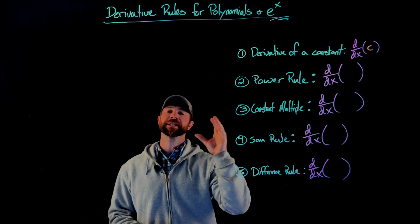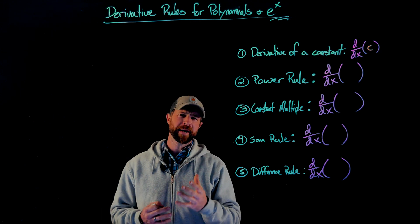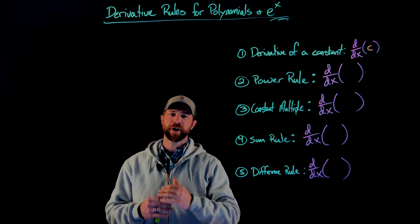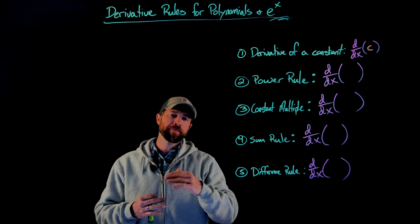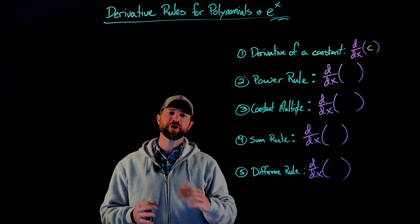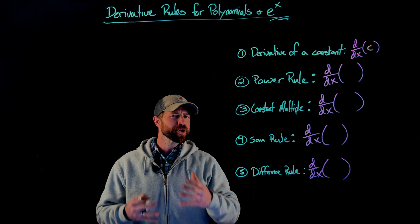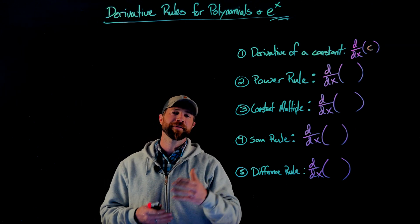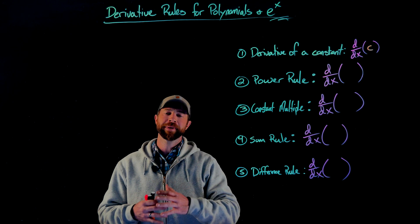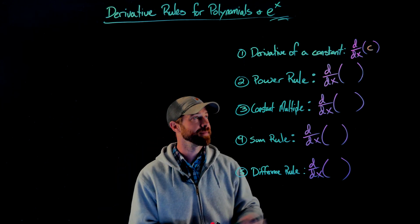Our first rule is for the derivative of a constant. A constant function is a function that outputs the same thing no matter what the input. So it should make sense that the derivative of a constant function is zero because there's no rate of change.